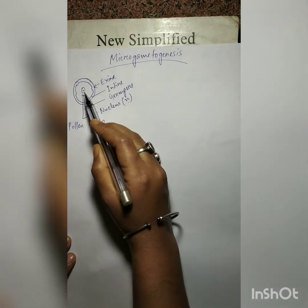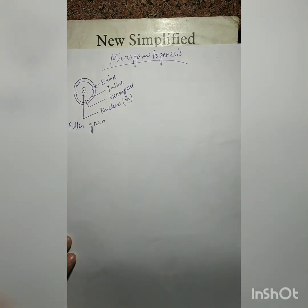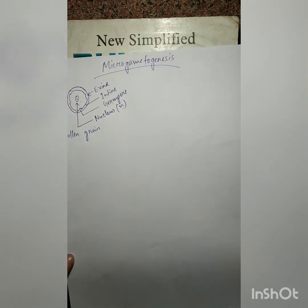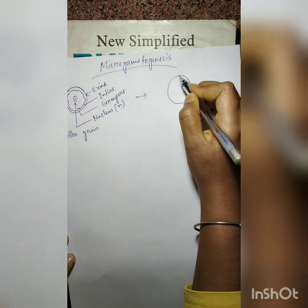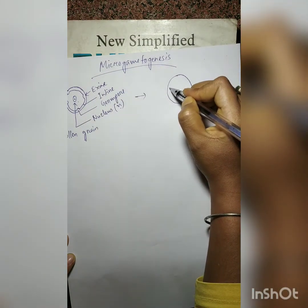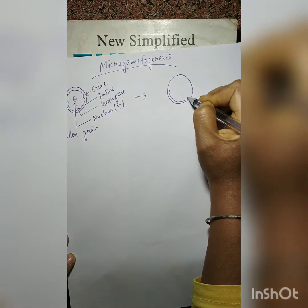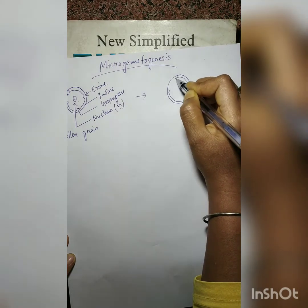Whatever may be the case, now this nucleus divides mitotically to form two nuclei, and in that way two cells are produced.